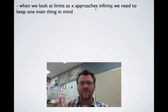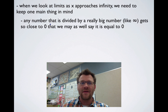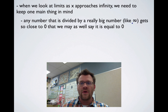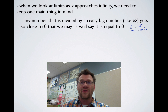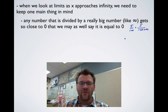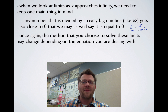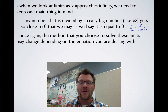When we look at limits as x approaches infinity, we need to keep one main thing in mind: any number divided by a really big number, like infinity, gets so close to zero that we may as well say it equals zero. For example, 5 divided by a million is very small, and 5 divided by an infinite number is basically zero. The method you choose may change depending on the equation, so you need to know all the methods we discuss today.